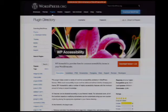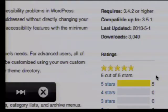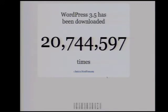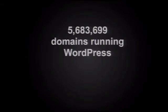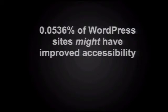If we look at a project like WordPress — and I thank Mike Gifford for bringing this up during our conversation yesterday — if we look at this plugin in WordPress called WP Accessibility, it has 3,049 downloads out of 20 million downloads for WordPress Core, and about 5,683,000 domains running WordPress. There are 0.0536% of WordPress sites running this module potentially to improve the basic accessibility of WordPress.